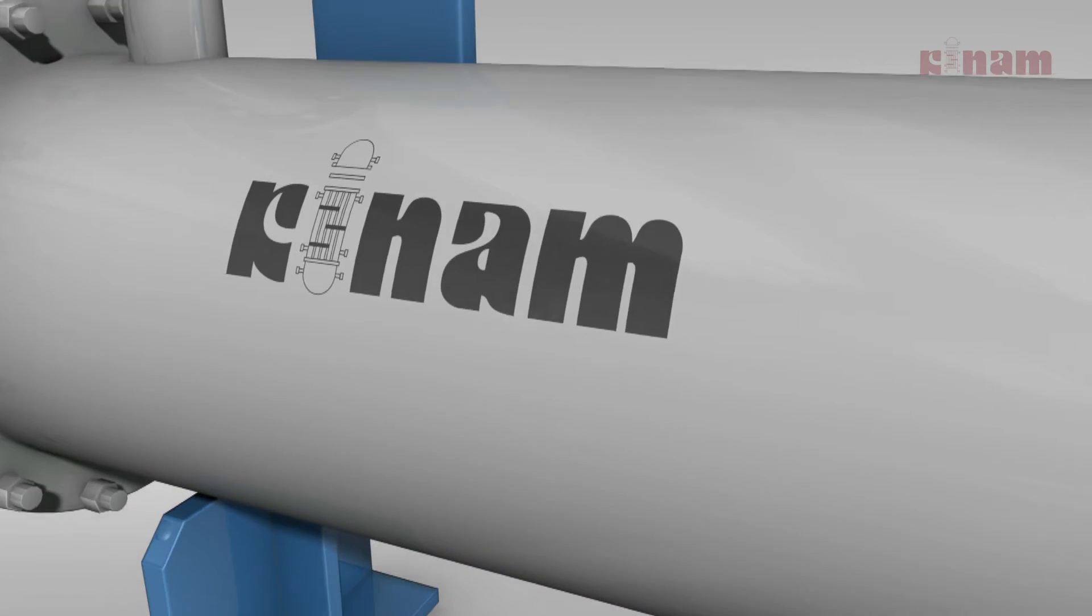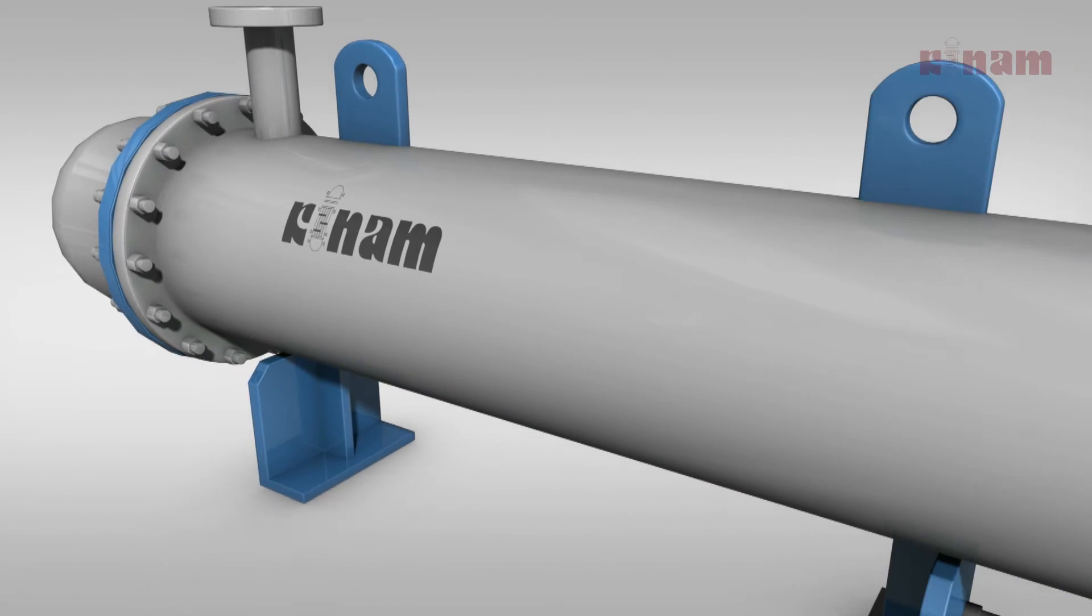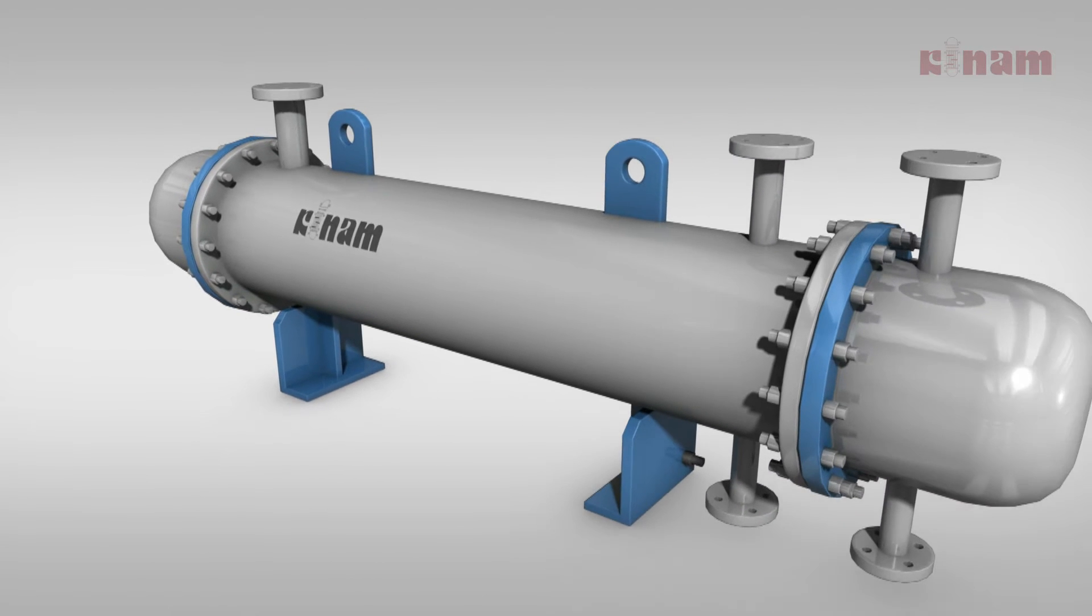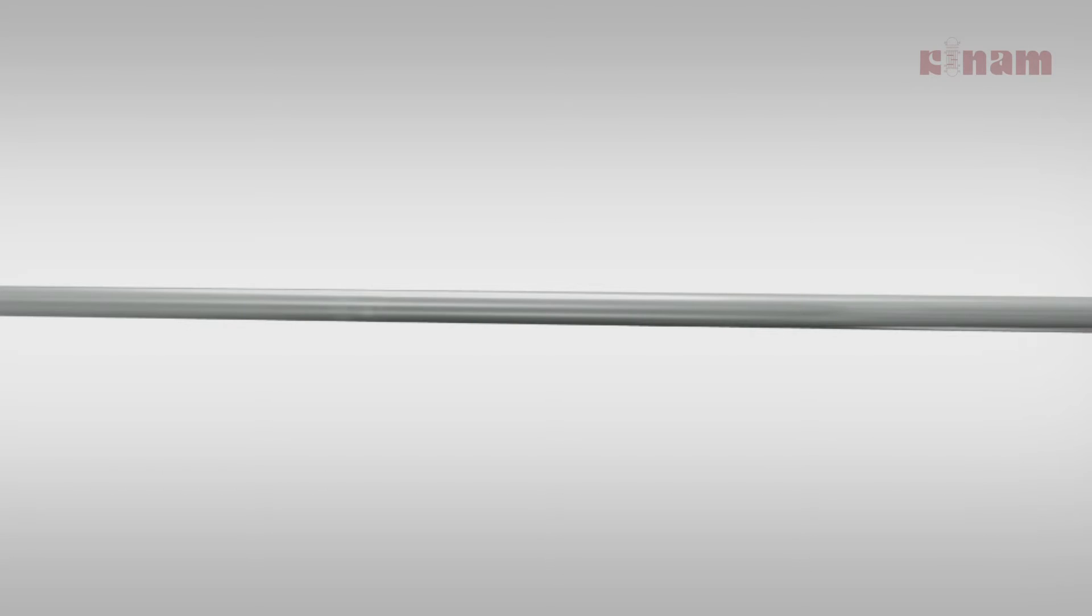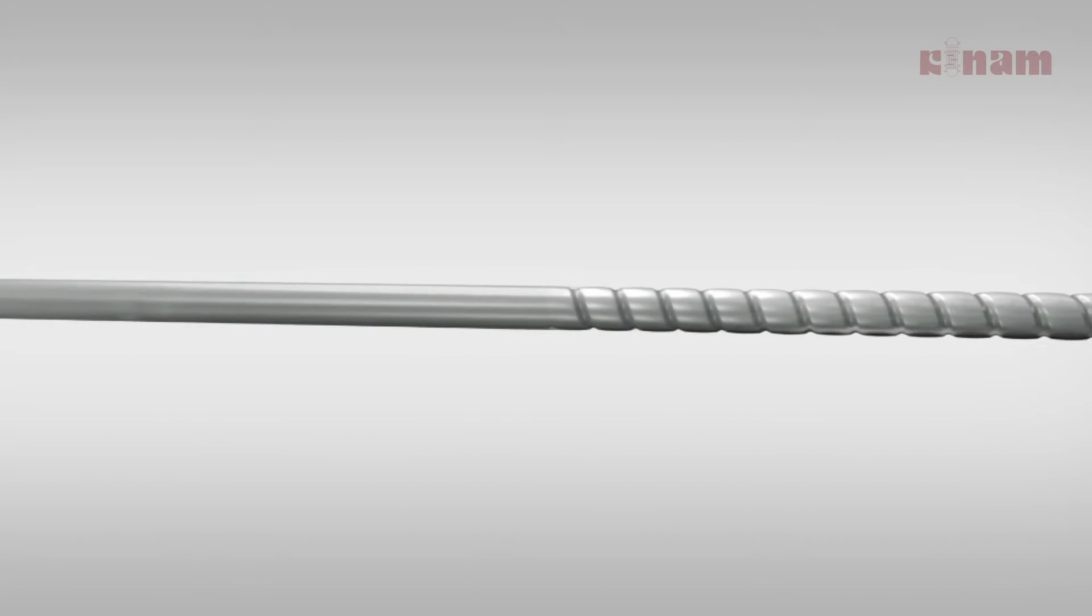KINAM's flagship product is the innovative corrugated tube heat exchanger, which is different from the conventional ones. A corrugated tube is produced by indenting a plain tube in helical pattern without any thinning of wall thickness or development of stresses in the tube.